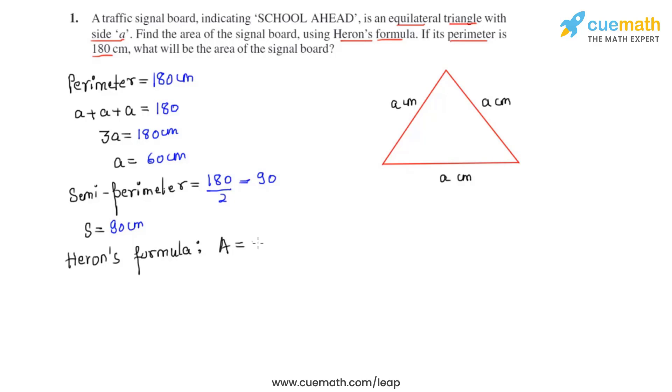Area A equals under root S times S minus A times S minus B times S minus C, where S is the semi-perimeter while A, B, C are the three sides of any given triangle.